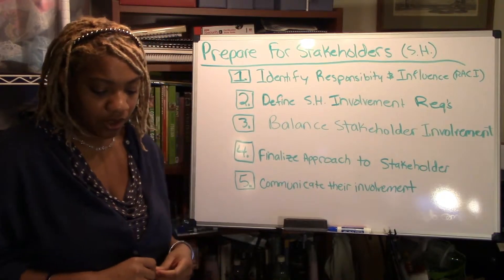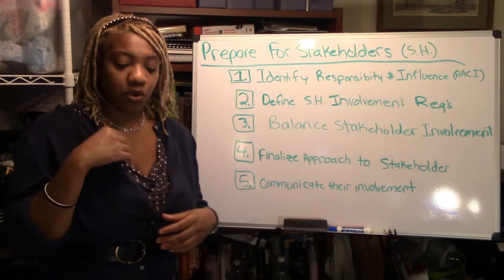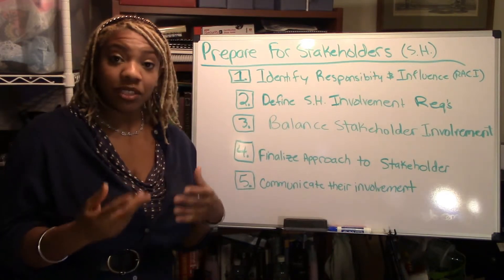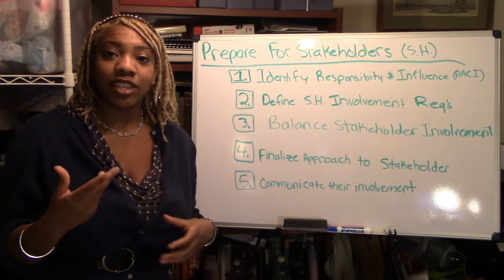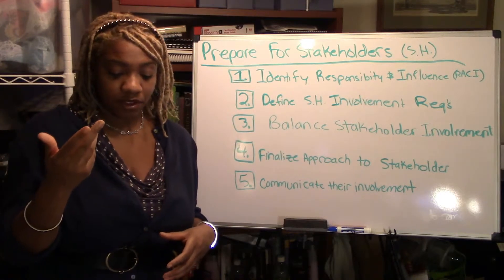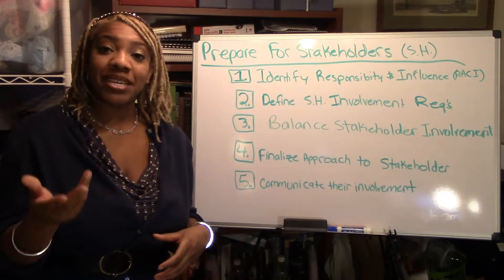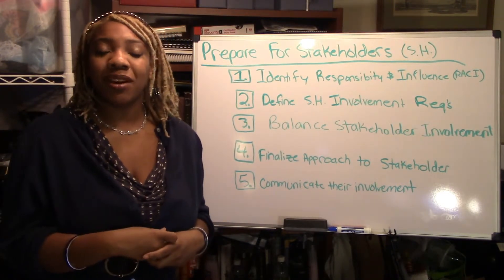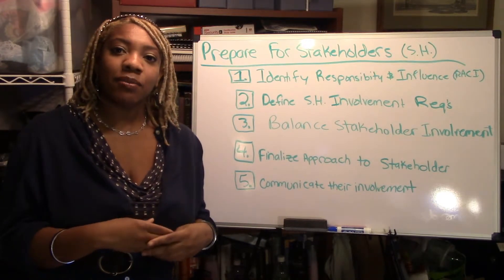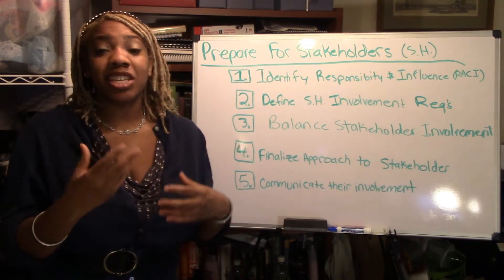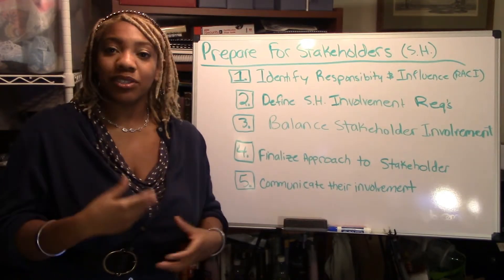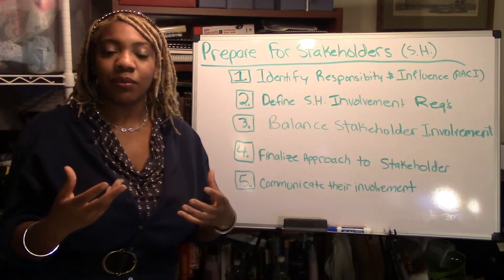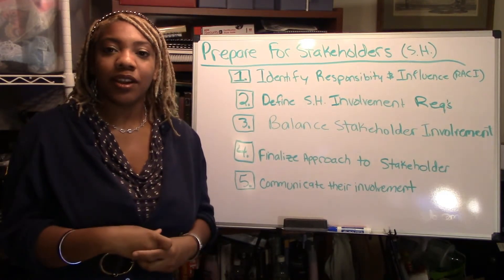Four, finalize your approaches to stakeholder involvement. Figure out how you're going to approach them, what levels of involvement for each one, and what action you're going to need to take in order to communicate with them or get their commitment to meet. Sometimes they're not so happy to include you if they feel the project isn't worth their time, but having the project sponsor to follow up with just in case you need to — plan out your course of action: if this person isn't participating, how do I get them to participate willingly and with enthusiasm?